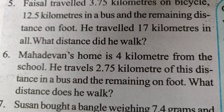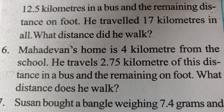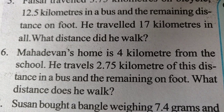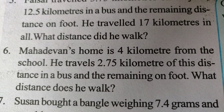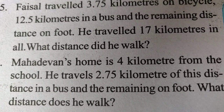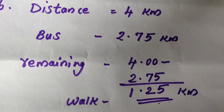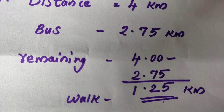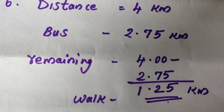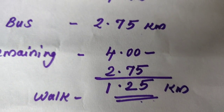Question 6. Mahadevan's home is 4 km from school. He travels 2.75 km of this distance by bus and the remaining on foot. What distance does he walk? We subtract: 4.00 minus 2.75. Working through the subtraction gives a walking distance of 1.25 kilometers.